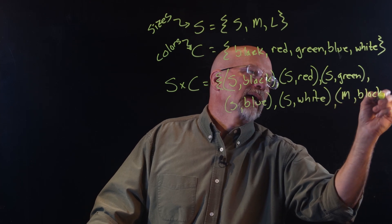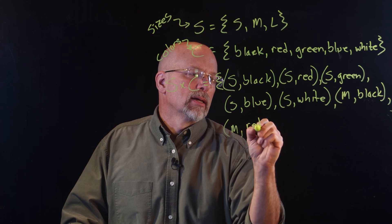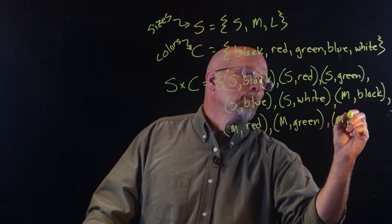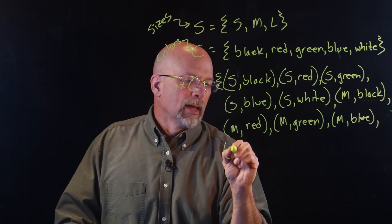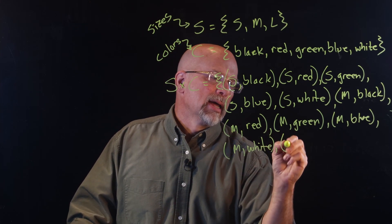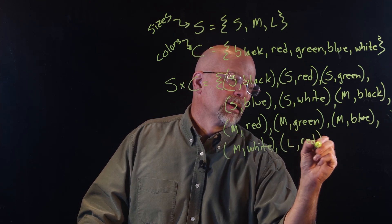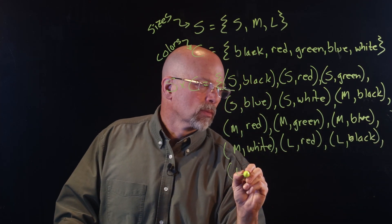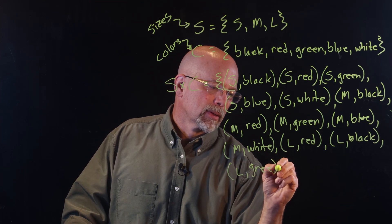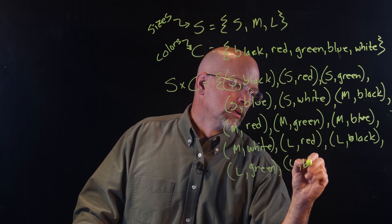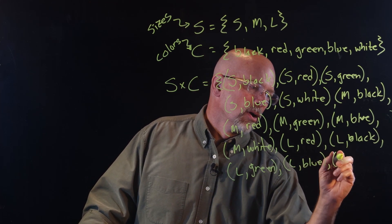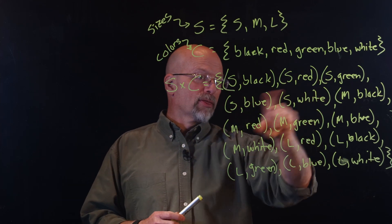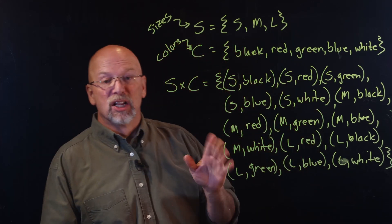Now we move on to medium, which is going to be paired with black, red, green, blue, and white. And last of all, we have large with black, red, green, blue, and large with white. Did I get all my ordered pairs there? Well, I've got three by five rows. Yeah, 15 looks good.